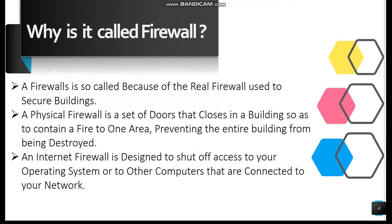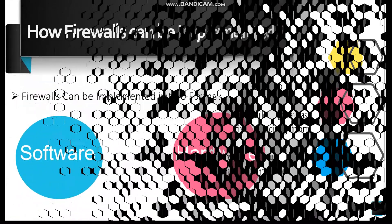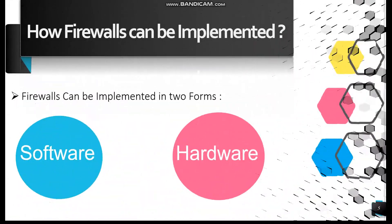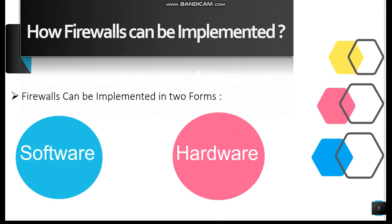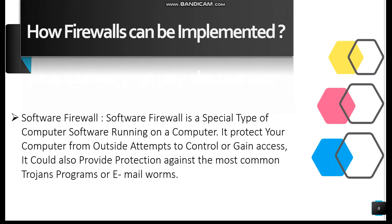Likewise, an internet firewall is designed to shut off access to your operating system from other computers that are connected to your network. The next question is: how can firewalls be implemented? Firewalls can be implemented in two forms: one is software firewalls and another is hardware firewalls.